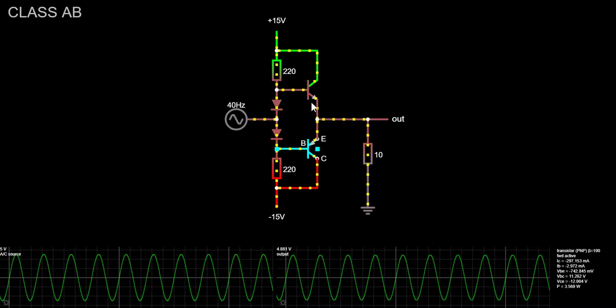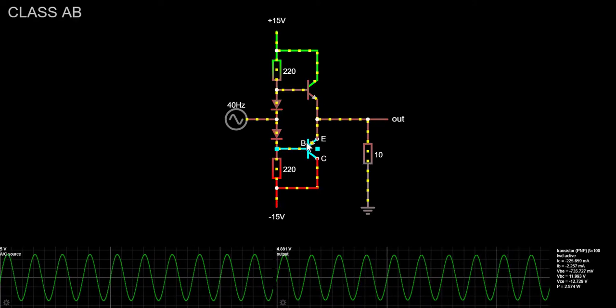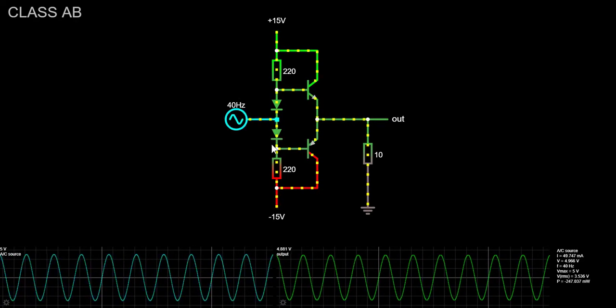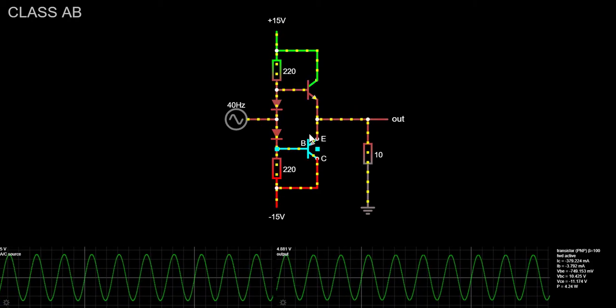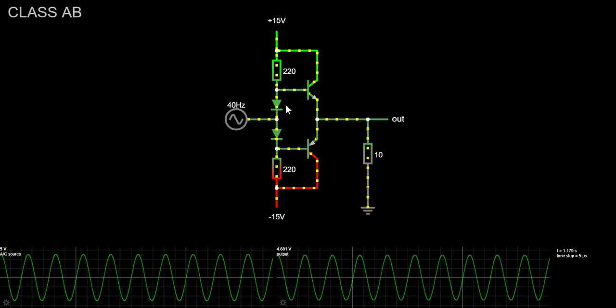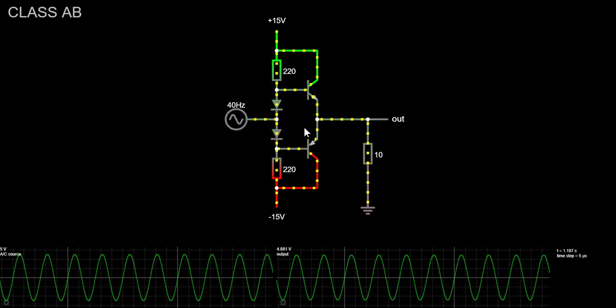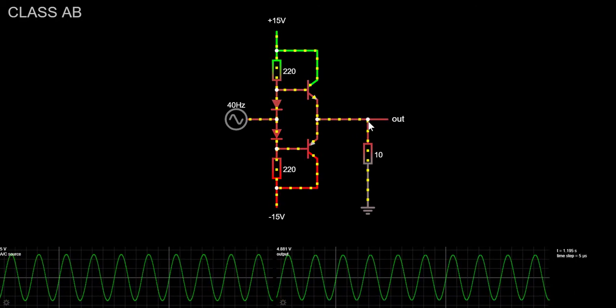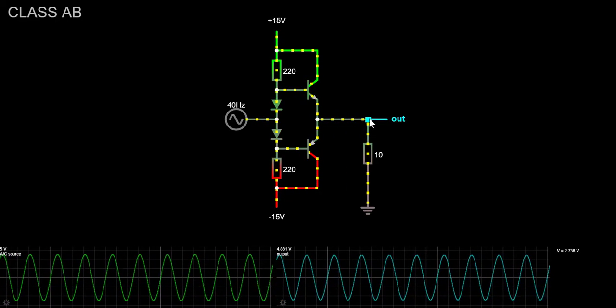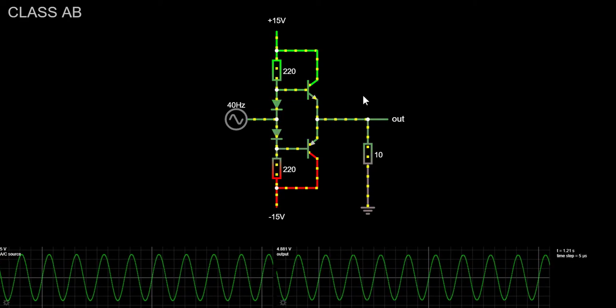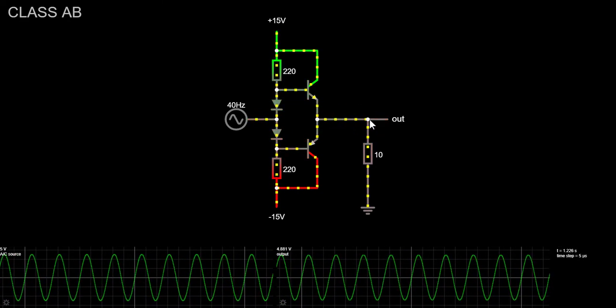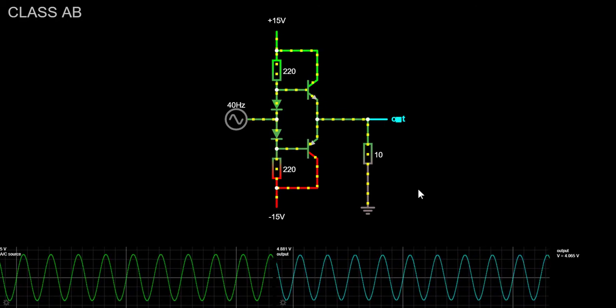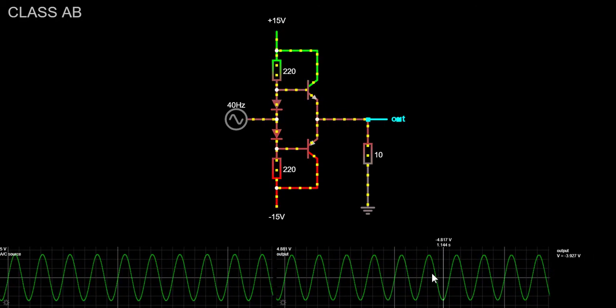Imagine also that these switches are operated at a high frequency, say at least 10 times the highest audio frequency, and that their relative timing is controlled such that the average output voltage equals the desired analog output. Finally, we add an LC low-pass filter to kill the high-switching signal, leaving only the desired low-frequency analog output intact.